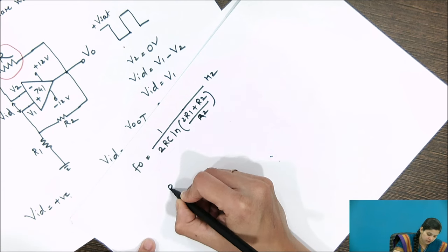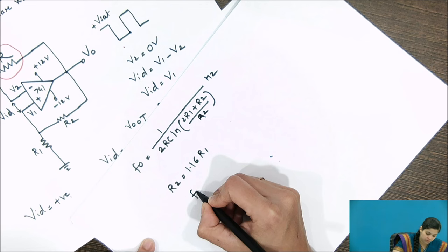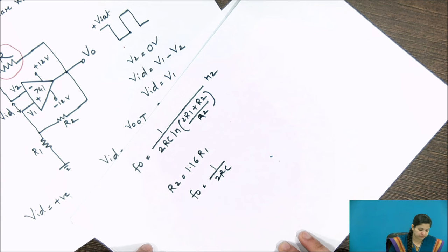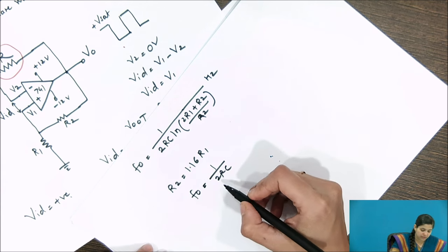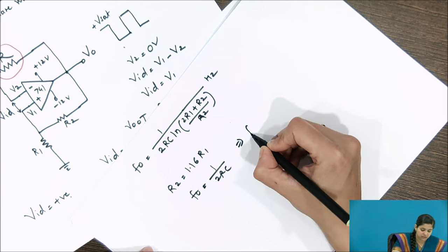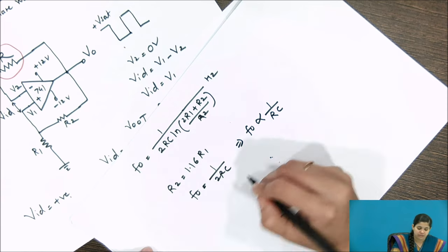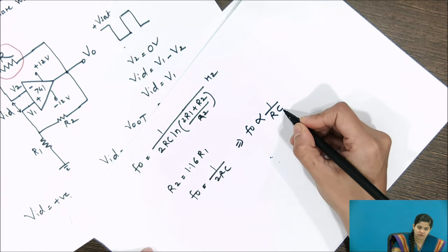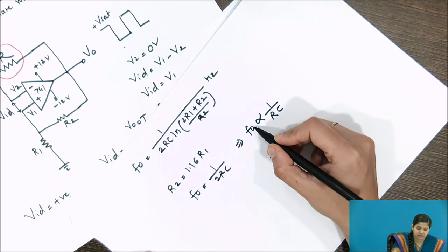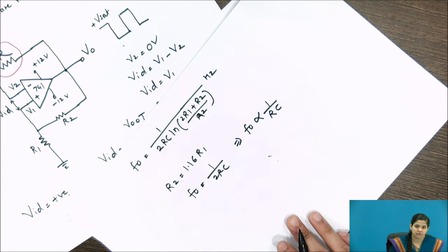If R2 is taken as 1.16 times R1, then the frequency simplifies to f₀ = 1/(2πRC) exactly. So we can calculate the frequency of the square wave as 1/(2πRC). The frequency is inversely proportional to R; if we keep C constant and increase R, the frequency decreases. The frequency depends on the values of both R and C.